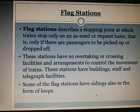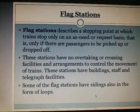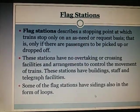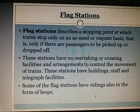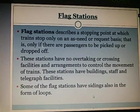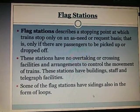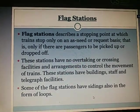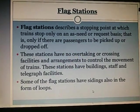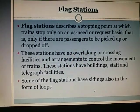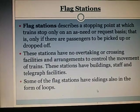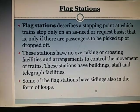Flag stations: A flag station describes a stopping point at which trains stop only on a need or request basis — that is, only if there are passengers to be picked up or dropped off. These stations have no overtaking or crossing facilities, and no arrangement to control the movement of trains. These stations have buildings, staff, and telegraph facilities.